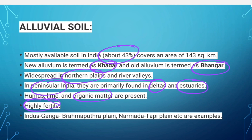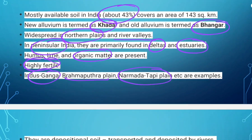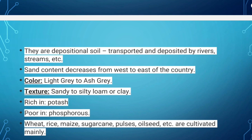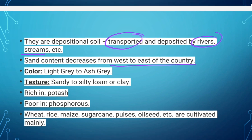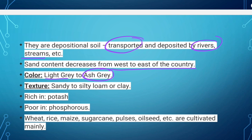The soil is highly fertile. The Indus-Ganga-Brahmaputra plain and the Narmada-Tapi plain are examples of alluvial soil. The soil is transported and deposited by rivers and streams. Sand content decreases from west to east. The color is light gray to ash gray, texture is sandy to silty loam or clay, and it is rich in potassium. Crops cultivated here include wheat, rice, maize, sugarcane, pulses and oilseeds.